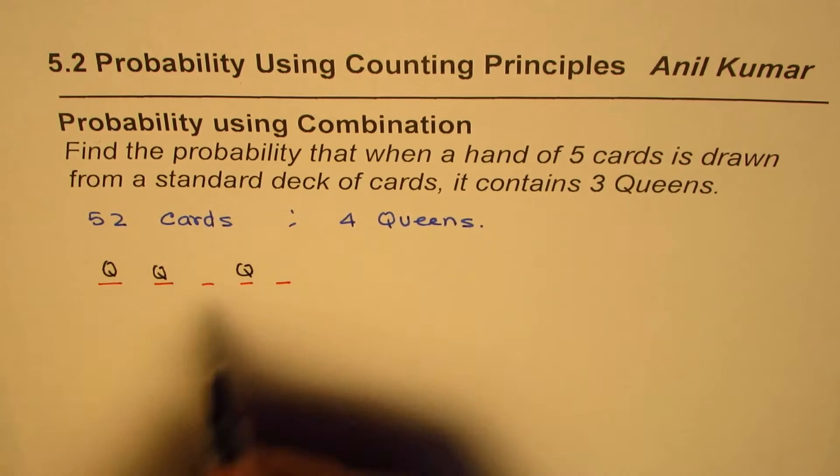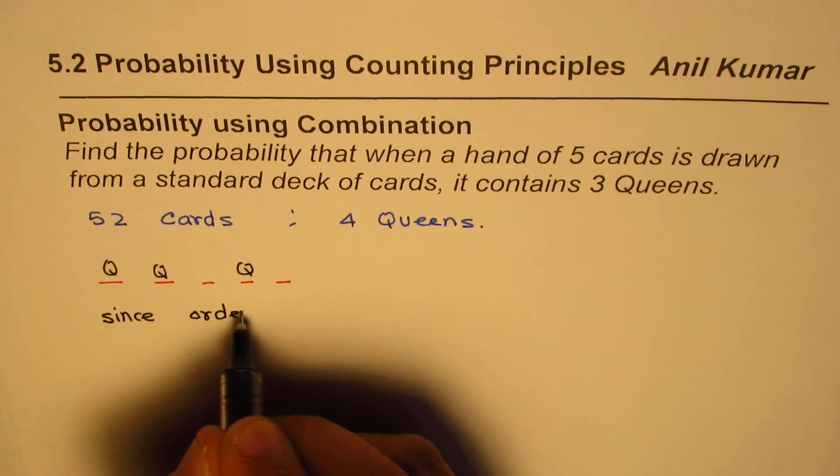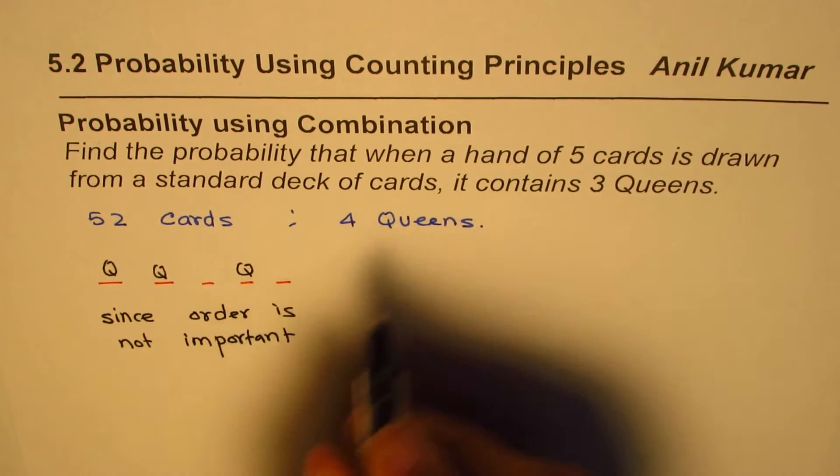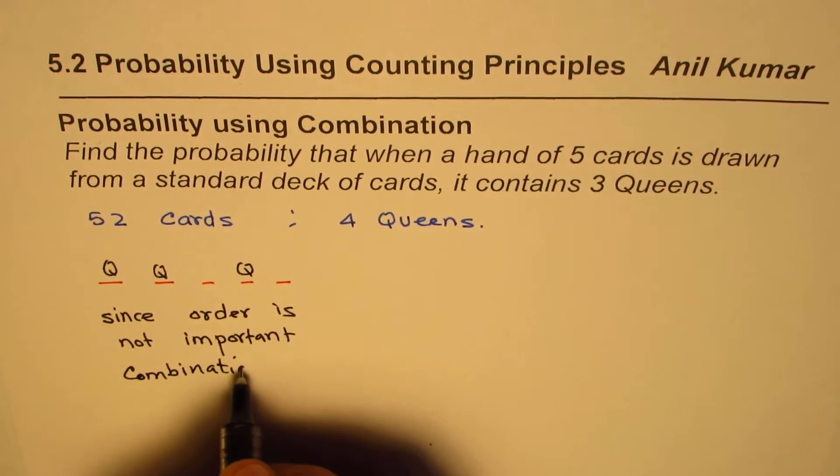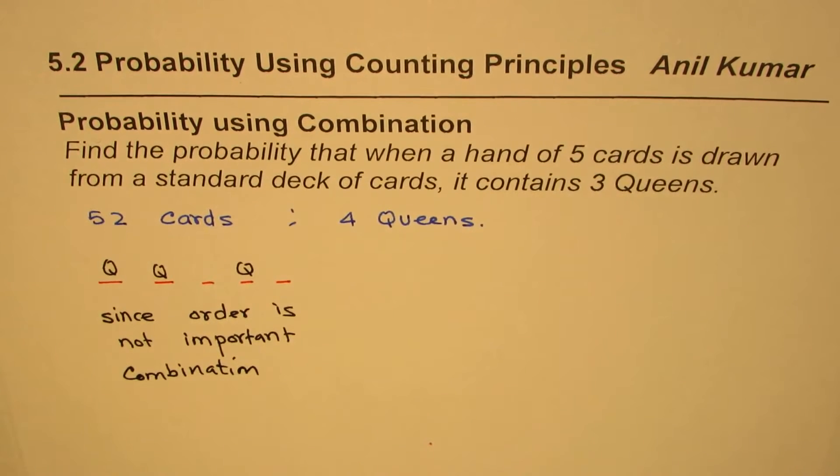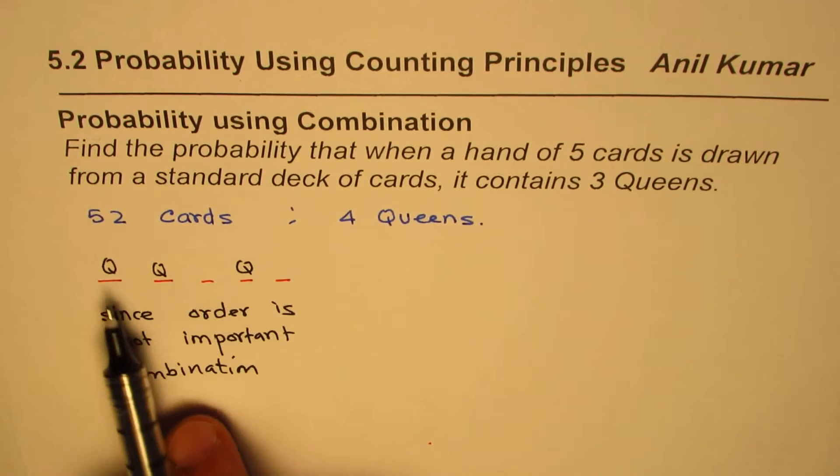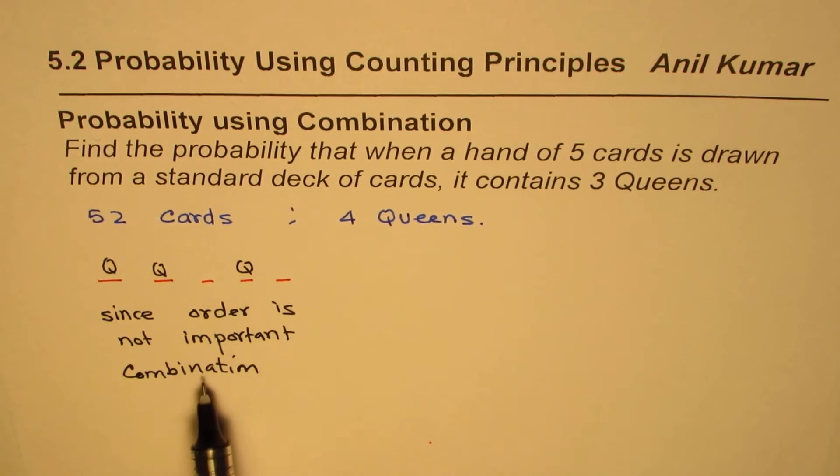In this case, since order is not important or not critical, this is a case of combination. First question is whether it is combination or permutation. Since we began with the topic of combination you could jump to it, but the reason here is that order is not important, and therefore it's a case of combination.